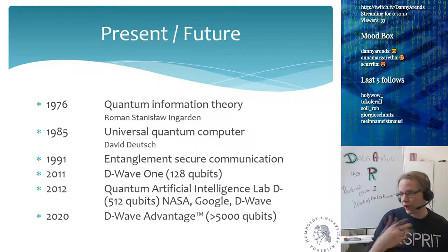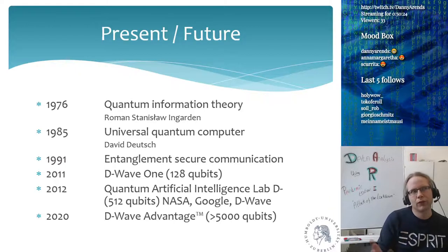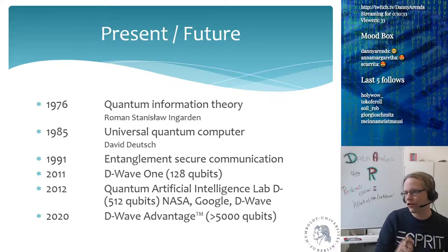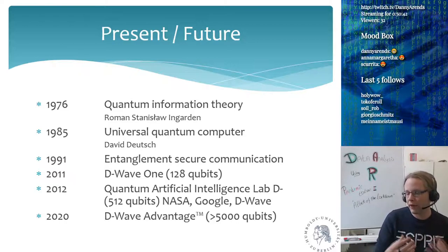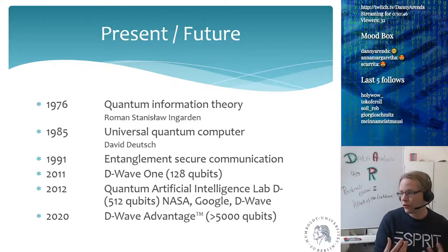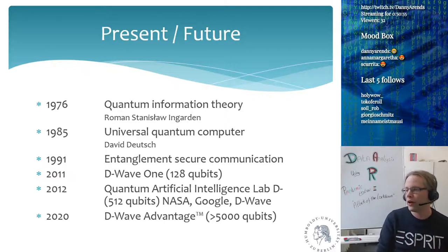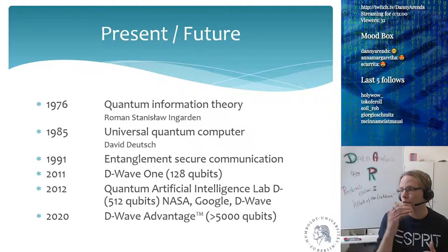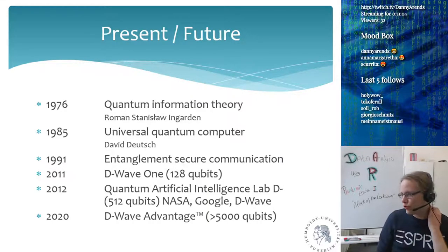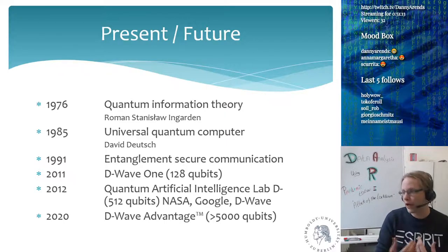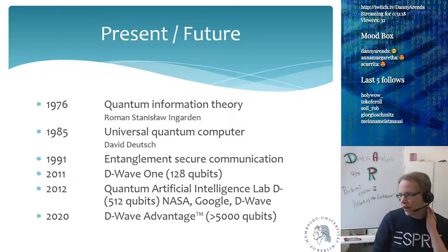Every machine nowadays uses the von Neumann architecture. Nowadays we're really on a threshold in computer technology. In 1976, Roman Stanislav Ingarten developed quantum information theory — based on quantum theory, things can be in superposition rather than just one or zero. In 1985, David Deutsch came up with the universal quantum computer. In 1999, we had the first entanglement used in secure communication — quantum mechanics is now used to secure big glass fiber cables running through the ocean.